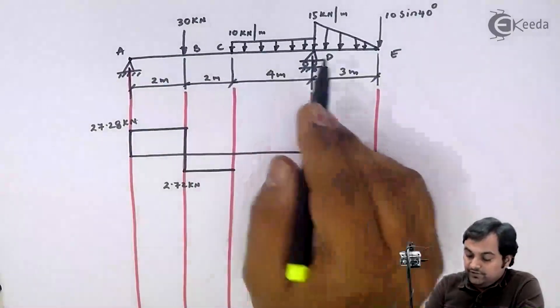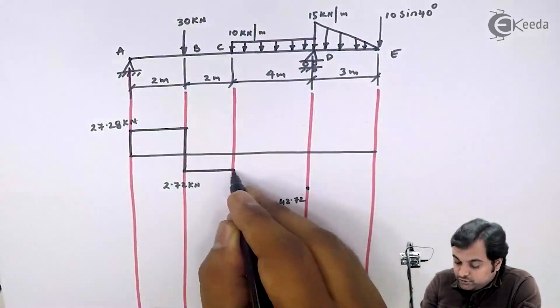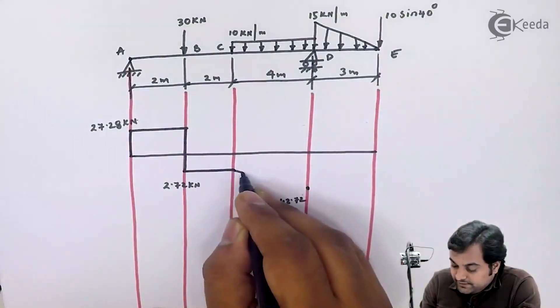So here first I will join between C to D. Since there is UDL, shear force should be an inclined line.